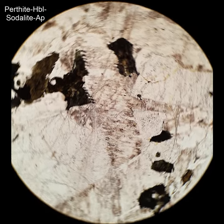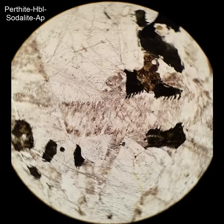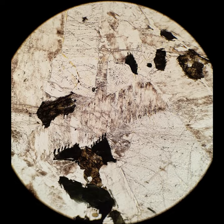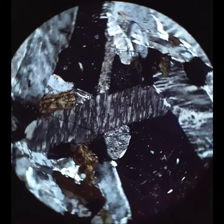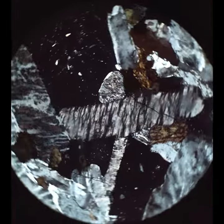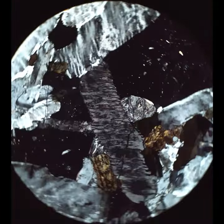This is just another really beautiful perthitic K-feldspar. Again, the K-feldspar is the part that has that little fine-grained brownish alteration along it. There are some other crystals that don't have that alteration that are black in cross polars, and that's the sodalite that is in this particularly alkali-rich intrusion.